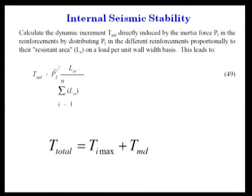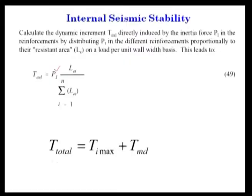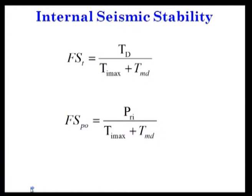PI is the inertia force, and LEi is used proportionally across the number of layers. The total T_total = Ti_max + TMD, where Ti_max is due to static load and TMD is due to dynamic load. The factor of safety for internal seismic stability is Td divided by (Ti_max + TMD).